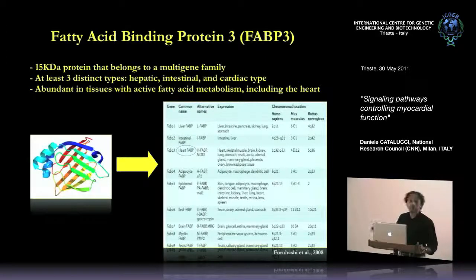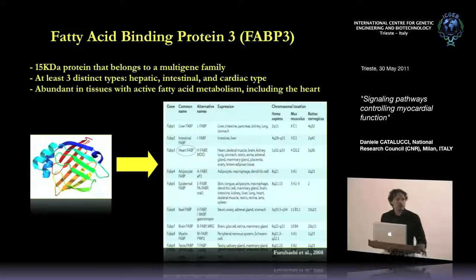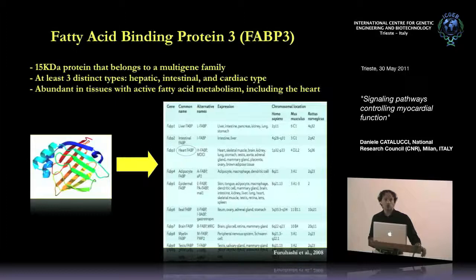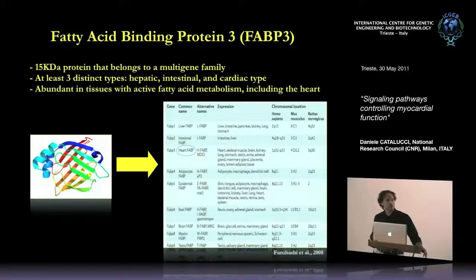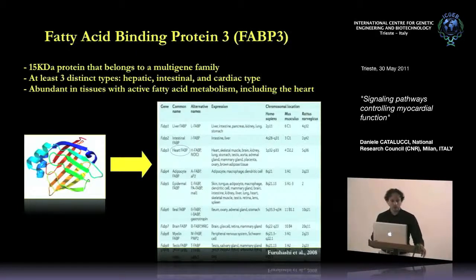FABP3 is a 15 kD protein belonging to a multi-gene family — as you can see, many different genes are produced from different chromosomal locations, specific to different compartments like liver, intestine, and adipocytes. This protein is produced in large amounts in the heart, comprising around 4–5% of the whole cytosolic protein pool, and it is highly abundant in tissues that activate fatty acid metabolism.